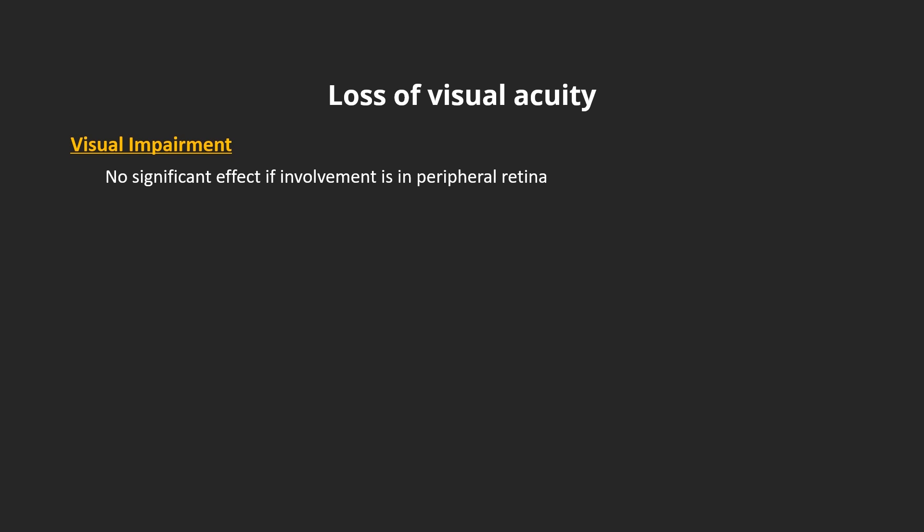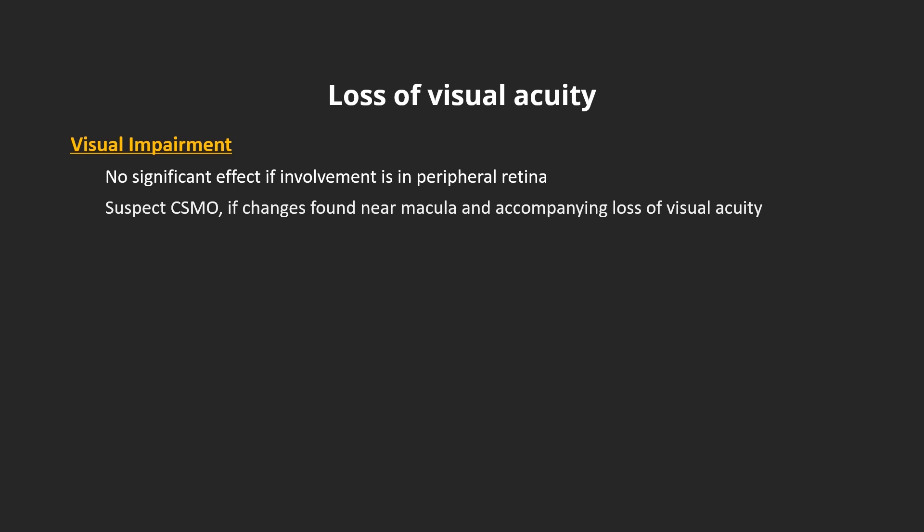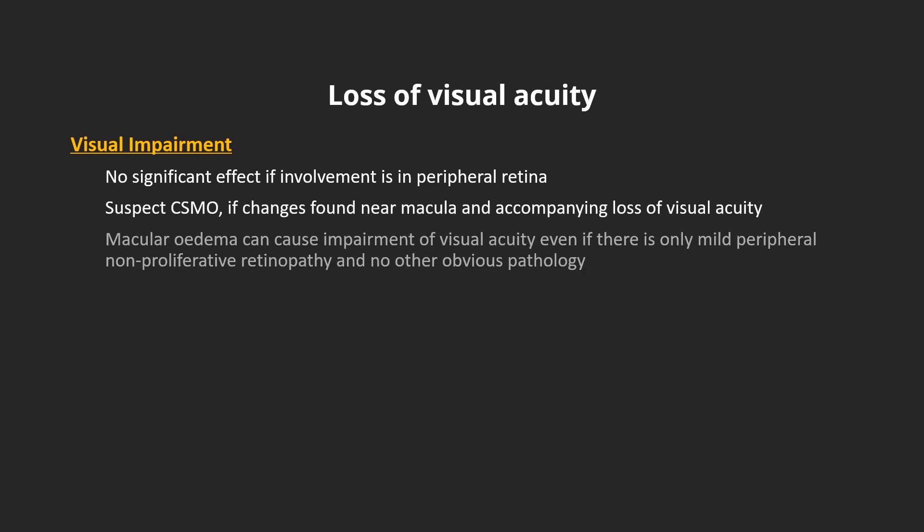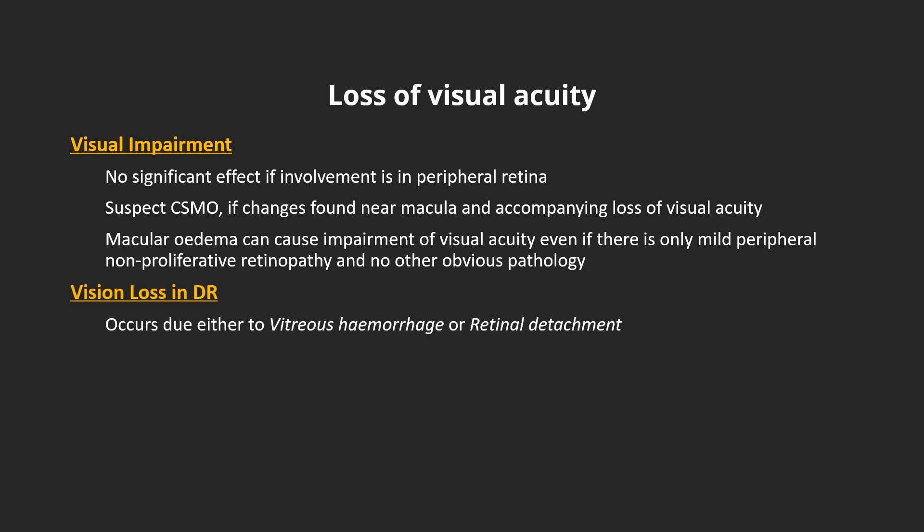Microaneurysms, abnormalities of the veins, small hemorrhages and exudates situated in the periphery will not interfere with vision. However, if these changes are observed near the macula, and in particular if they are accompanied by loss of visual acuity, clinically significant macular edema should be suspected. Macular edema can cause impairment of visual acuity even if associated with only mild peripheral non-proliferative retinopathy and no other obvious pathology. Macular edema can only be confirmed or excluded on slit-lamp retinal biomicroscopy. Sudden visual loss occurs with either vitreous hemorrhage or retinal detachment.